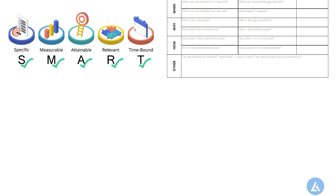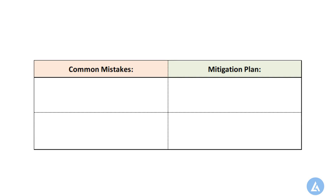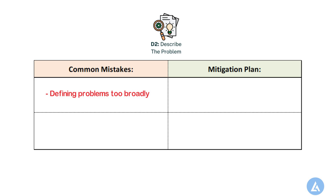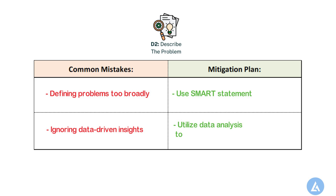Common mistakes professionals make during D2 include defining the problem too broadly or vaguely, and in some cases ignoring data-driven insights. We can avoid these mistakes by using SMART problem statements and utilizing data analysis tools like Pareto Charts and Histograms to quantify the issue.